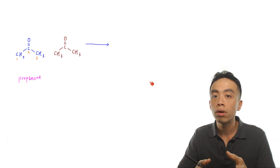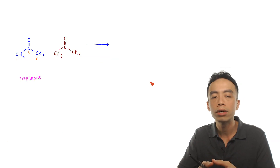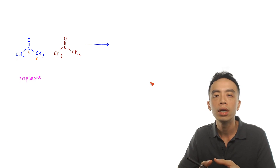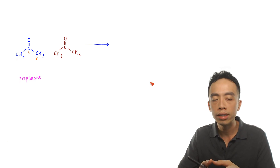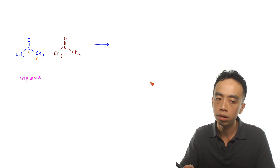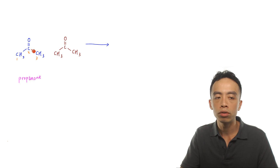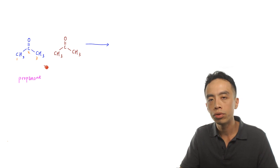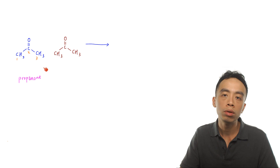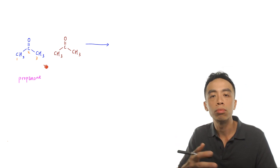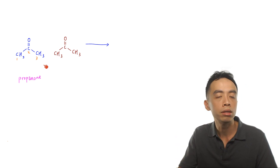Aldol addition reaction also applies to ketones. Using propanone as an example — propanone is easier because it is symmetrical: the C=O group is attached to a CH₃ on one side and CH₃ on the other. Therefore there is only one type of alpha carbon that can act as a nucleophile, making the product straightforward to figure out.